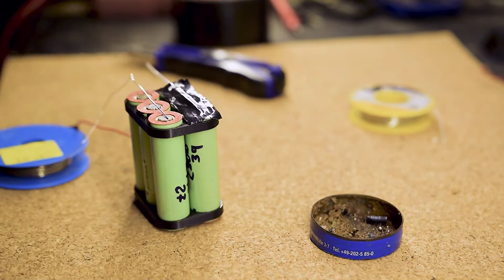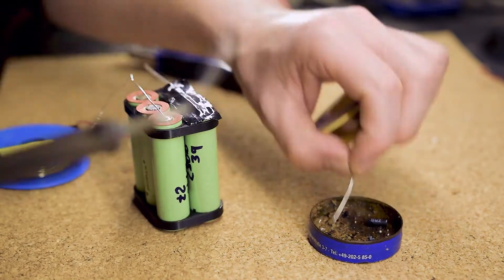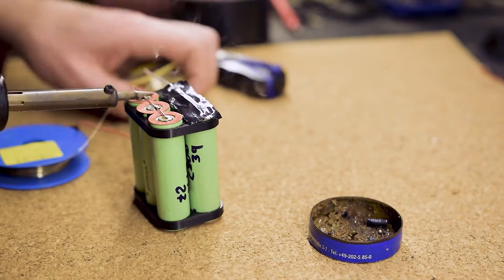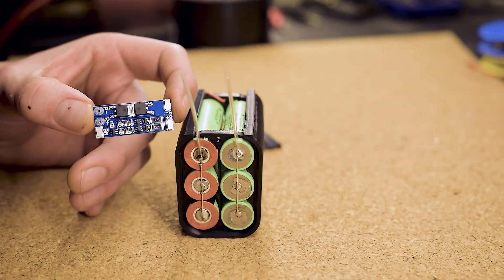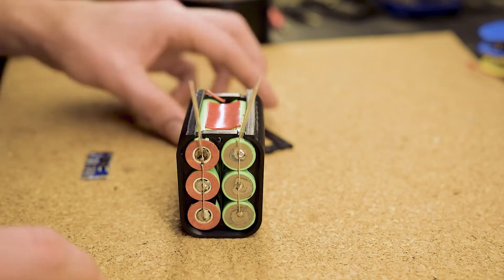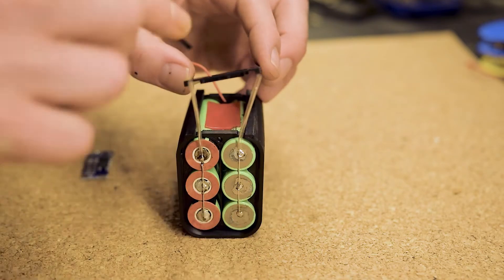Now, repeat all the steps for the positive terminal of the battery. When finished, it is time to integrate the BMS. It will be fixed to the cells with double sided sticky tape.